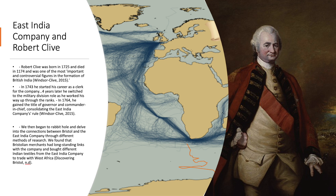Through Bristol University's Department of Historical Studies and our rabbit hole research, we discovered that Robert Clive was born in 1725 and died in 1774, and was one of the most important and controversial figures in the formation of British India. In 1743 he started his career as a clerk for the company, and four years later switched to a military division role, working his way up through the ranks. In 1764 he gained the title of Governor and Commander-in-Chief, consolidating the East India Company's rule. However, our rabbit hole ended here as Clive did not have significant connections to Bristol — he only passively traded through it rather than living there.